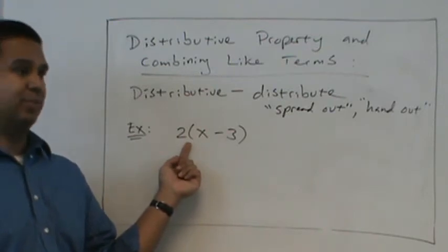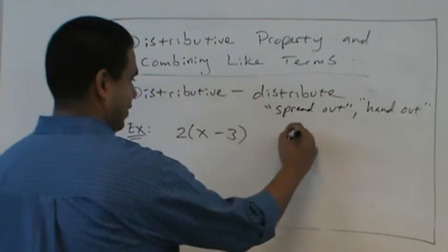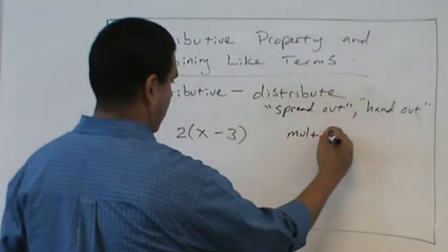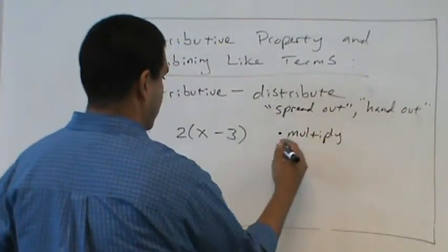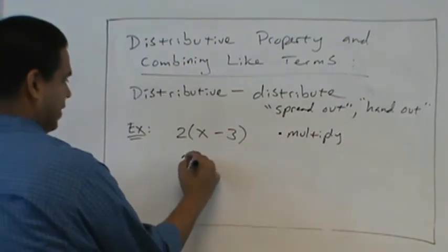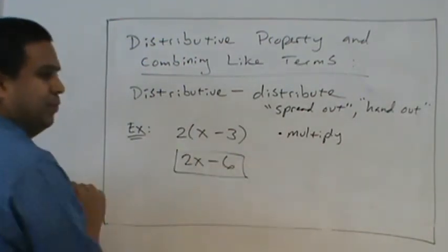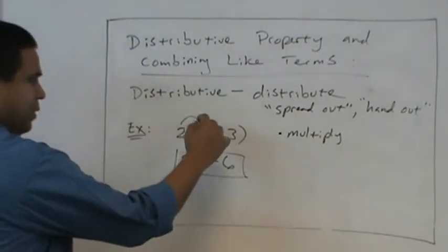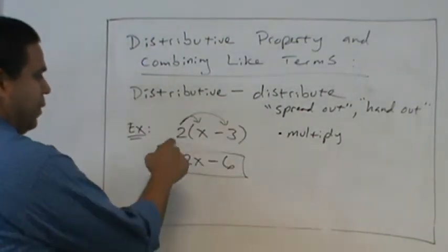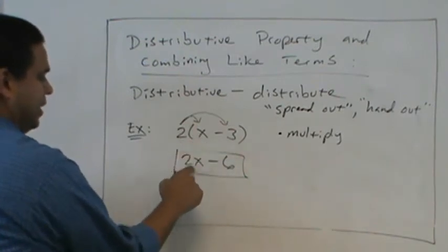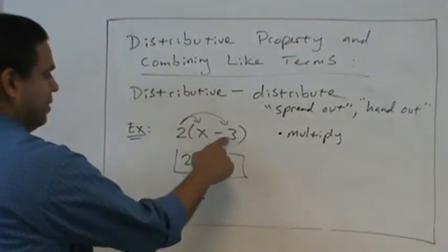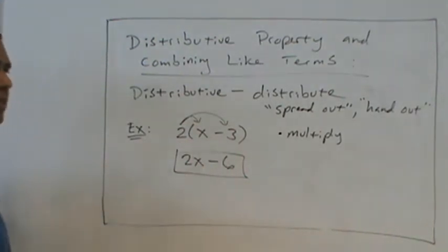Multiply. Multiply. So we're going to multiply. So this is going to be? 2x minus 6. Very good. Some of you know this rule already. So we distribute, and we multiply this 2 times the x to get 2x, 2 times the negative 3, negative 6. Okay?